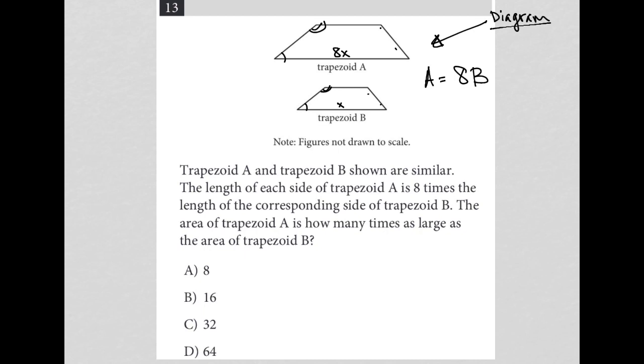Now this is a little bit of a tricky question because you may know a formula for finding the area of the trapezoids, but we don't have any actual side lengths. We don't know the height, which is a part of finding the area of a trapezoid. We don't know this top length. We do know that for trapezoid A, it's eight times larger, but we don't know exactly what it is. We don't know the bottom here. So there are a couple ways to answer this question.